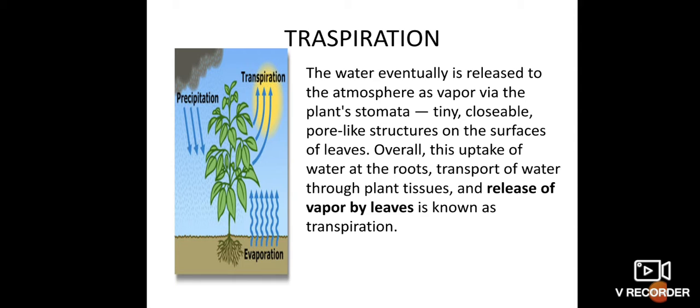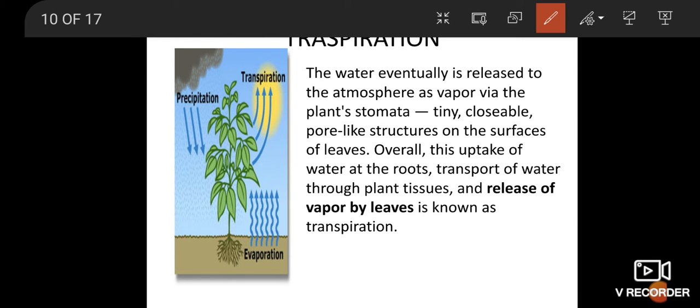First topic is transpiration. The water eventually is released to the atmosphere as vapor via the plant's stomata - tiny closable pore-like structures on the surface of leaves. This uptake of water at the roots, transport of water through plant tissues, and release of vapor by leaves is known as transpiration.